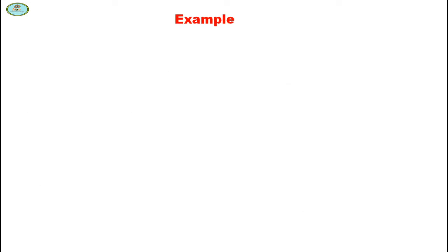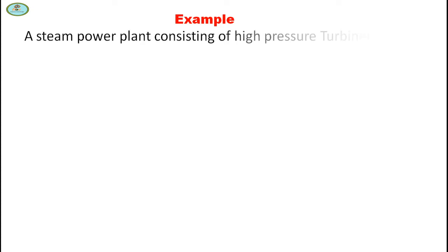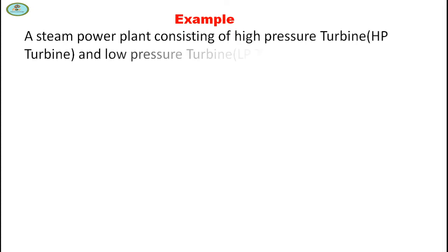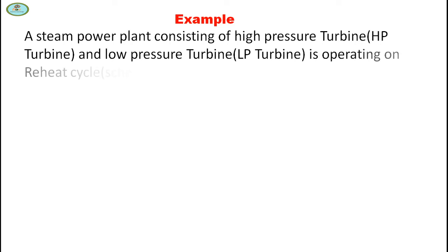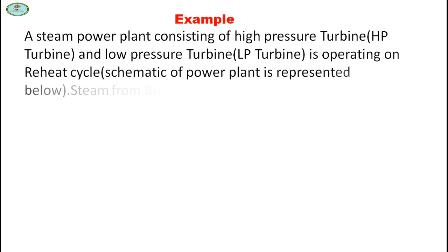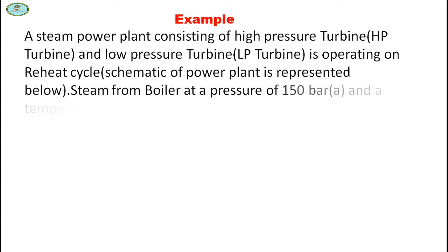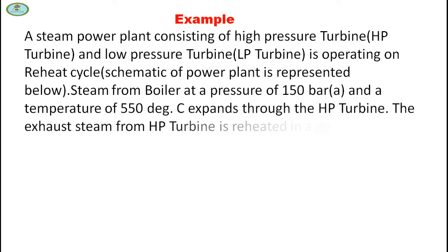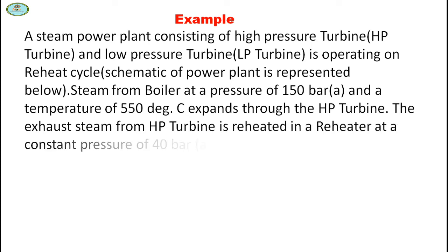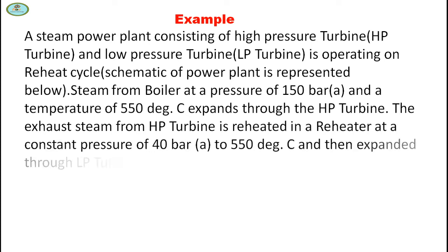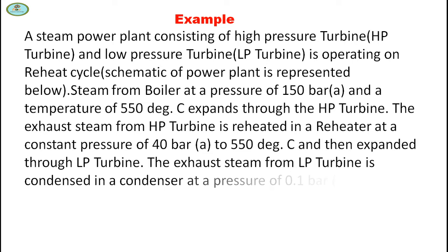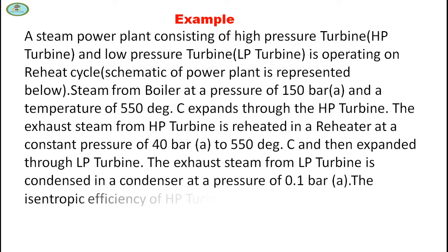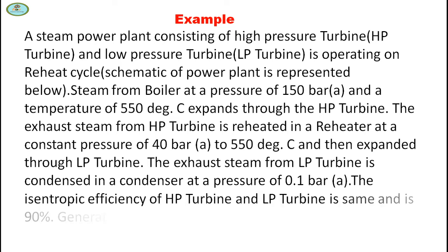Now we take an example for better understanding. A steam power plant consisting of a high-pressure turbine and a low-pressure turbine is operating on a reheat cycle. Steam from the boiler at a pressure of 150 bar and temperature of 550°C expands through the HP turbine. The exhaust steam from the HP turbine is reheated in a reheater at a constant pressure of 40 bar to 550°C, then expanded through the LP turbine. The exhaust steam from the LP turbine is condensed in a condenser at 0.1 bar.